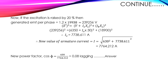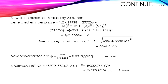The new kVA is determined by taking the product of the phase voltage and the new armature current. The final answer is in MVA.